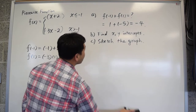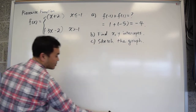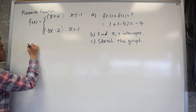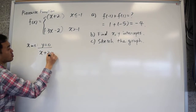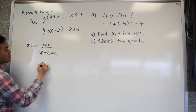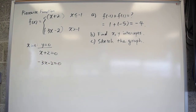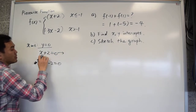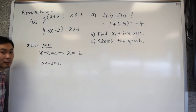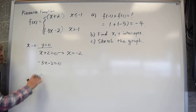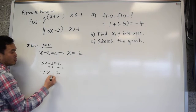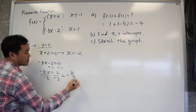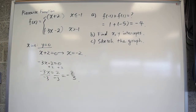Second question: find the x and y intercepts. For x-intercepts, set y equal to 0. So I want to know when x plus 2 equals 0, and when negative 3x minus 2 equals 0. The first gives x equals negative 2. For the second, add 2 to both sides: negative 3x equals positive 2, then divide by negative 3 to get x equals negative 2 thirds.